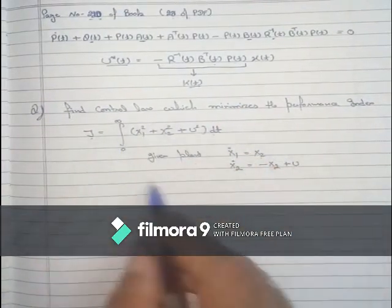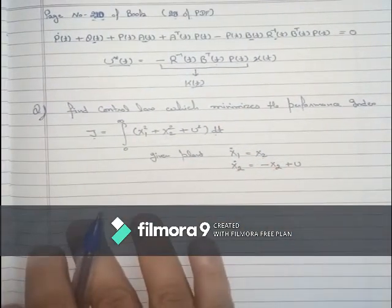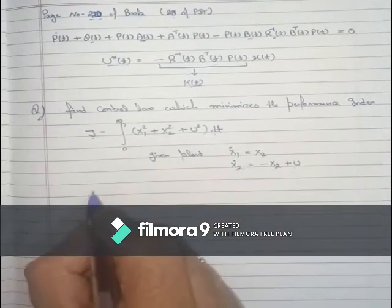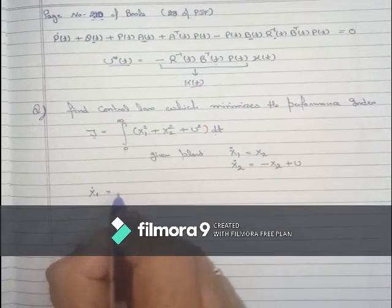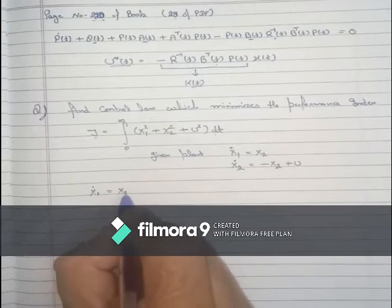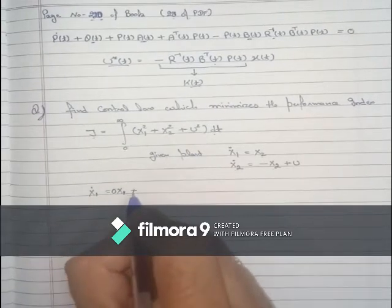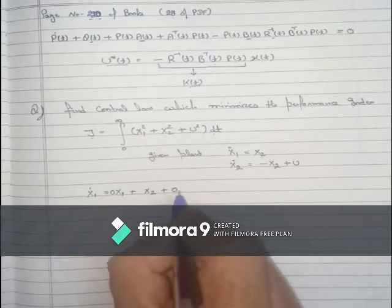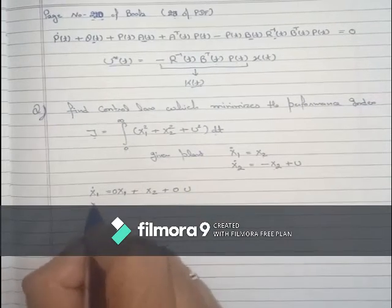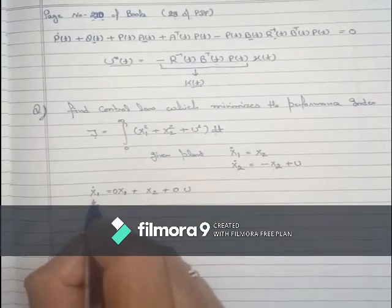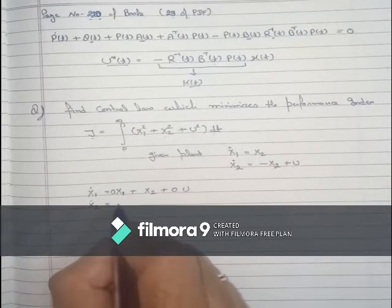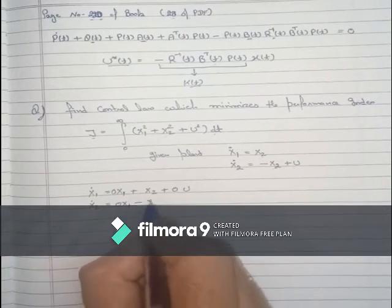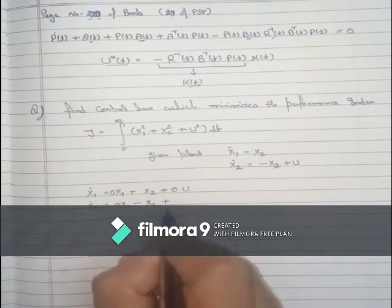From the plant equations, let X1_dot equal X2, which is 0·X1 plus 1·X2 plus 0, and X2_dot equal 0·X1 plus minus X2 plus u.